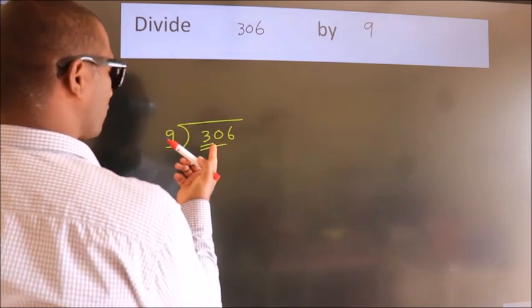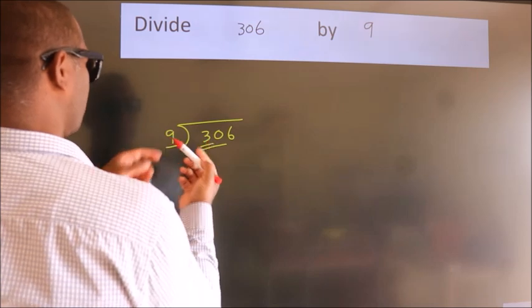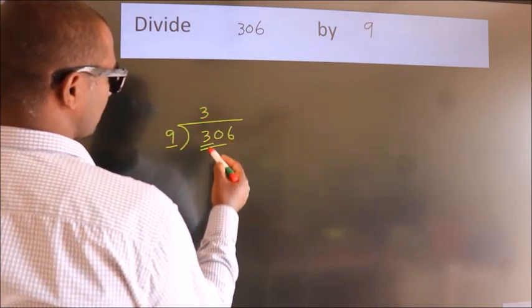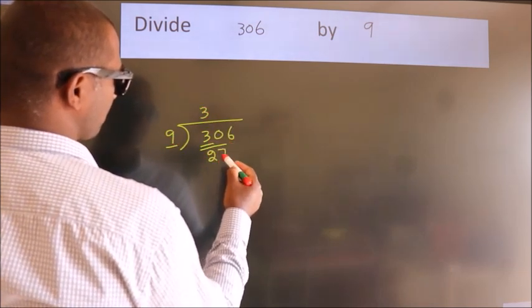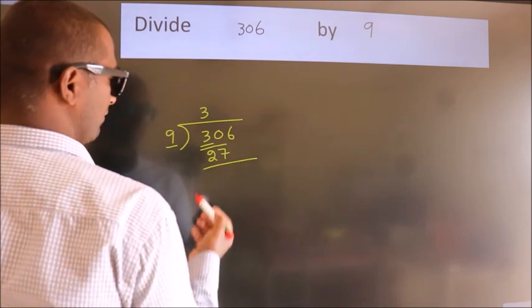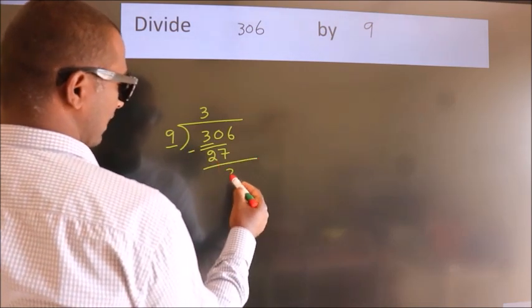A number close to 30 in the 9 table is 9 threes, 27. Now, we should subtract. We get 3.